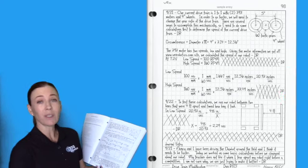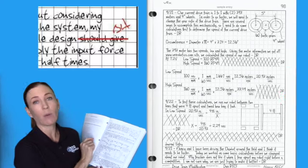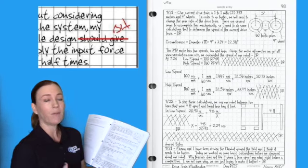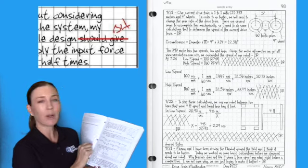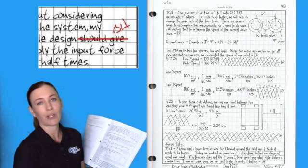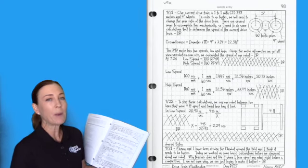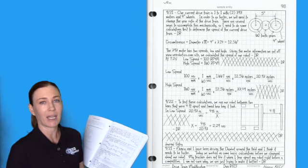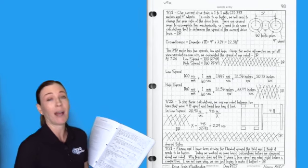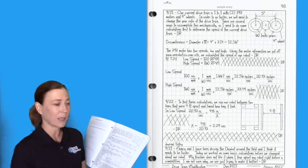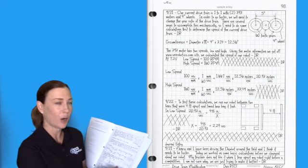If there's a mistake, you can simply cross it out with one line. All mistakes are actually required to remain in the notebook, but if it's a spelling mistake, you can cross it out with one line and also initial it, meaning you did intend to cross that out — yes, it was a mistake. Don't be embarrassed about mistakes. Mistakes are going to happen all of the time. That's actually how we learn, so we like to see mistakes in engineering notebooks.